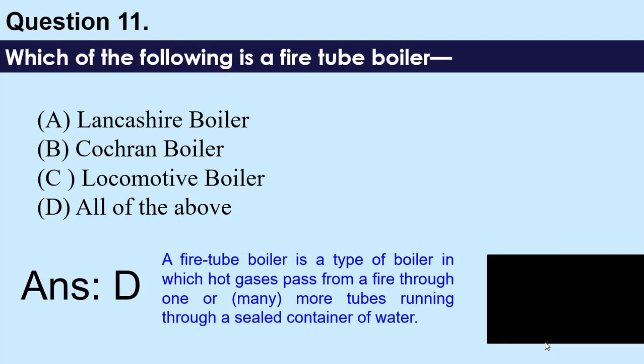A fire tube boiler is a type of boiler in which hot gases pass from a fire through one or many tubes running through a sealed container of water. Lancashire boiler, Cochrane boiler, and locomotive boiler are all fire tube boilers.